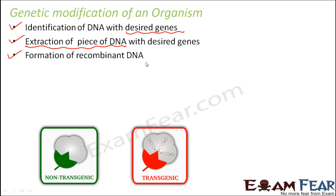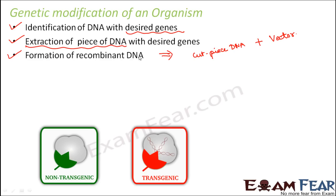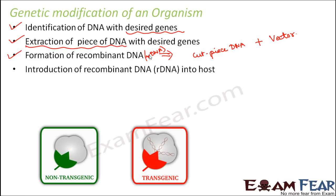Once that is done, formation of recombinant DNA takes place. This happens when the cut piece of DNA — the piece we cut in step 2 — combines with the vector DNA, that is the vehicle DNA, which is nothing but the plasmid DNA. These two combine to form the recombinant DNA, also known as rDNA.